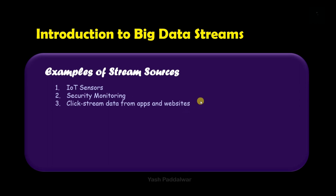Another stream source is click stream analysis, which is done in apps as well as websites. For example, Amazon monitors the activity of each user — how much time a user spends on a particular page, how many users leave a page after viewing it, or how many users switch to other pages after viewing the home page. This click stream behavior of users is a big source of data and can be used for analysis and recommending products to users.